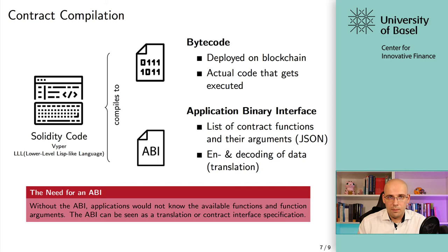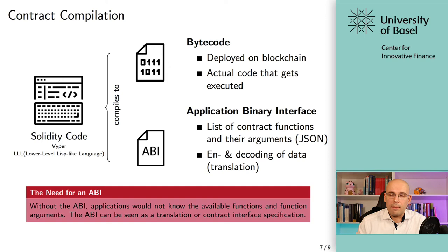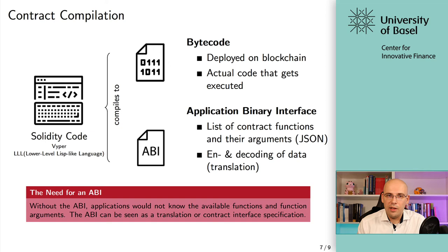Once you are developing a smart contract, you write it, you test it, and then there is a process called compilation. To understand compilation, you have to understand that writing the smart contract using Solidity is in fact a relatively high-level language — something optimized for human readability structured with humans in mind. Before you can deploy it, what happens is compilation into bytecode. The bytecode is the machine-readable code, the really low-level instructions — that is what is actually deployed on the blockchain and actually executed. Solidity is just an abstraction that gets compiled later into bytecode. There are alternatives to Solidity, for example Viper and LLL.